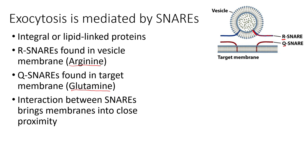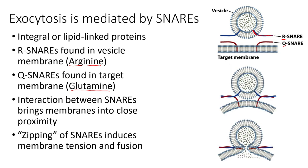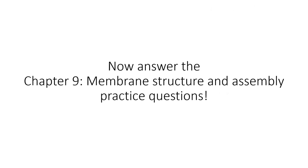Once these SNAREs come close together, they start to interact with each other in ways that help pull the membrane of the vesicle and the target membrane even closer together. We can call this process the zipping. As the R-SNARE and Q-SNARE start to interact and twist together, they pull the vesicle closer to the target membrane. Ultimately it becomes energetically favorable to fuse the vesicle with the target membrane — because if they get squeezed together too tightly, it's more energetically favorable to exclude that water and form one big lipid bilayer. With that, you should be ready to answer the chapter 9 membrane structure and assembly practice questions.